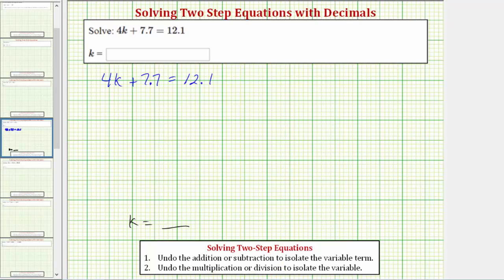Looking at our equation on the left side, we need to begin by undoing plus 7.7 by performing the opposite or inverse operation on both sides of the equation. Therefore, to undo plus 7.7, we will subtract 7.7 on both sides of the equation. Simplifying, the minus 7.7 undoes the plus 7.7, leaving us with just 4k on the left side.